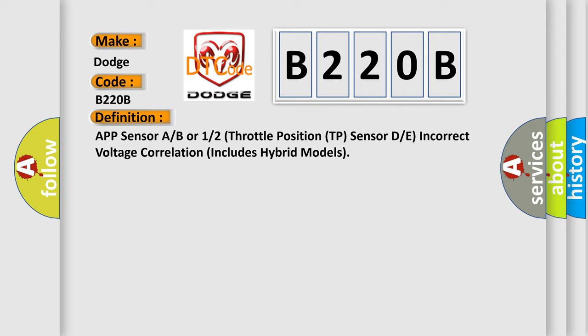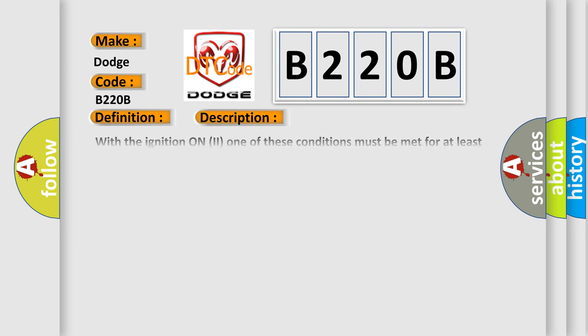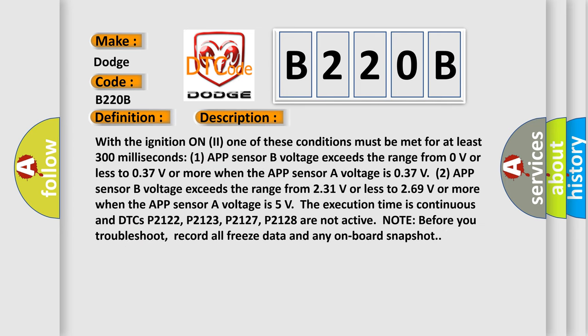Here is a short description of this DTC code. With the ignition on, one of these conditions must be met for at least 300 milliseconds. One: App sensor B voltage exceeds the range from 0 volts or less to 0.37 V or more, when the App sensor A voltage is 0.37 V. Two: App sensor B voltage exceeds the range from 2.31 volts or less to 2.69 volts or more — for example, when the App sensor A voltage is 5 volts. The execution time is continuous and DTCs P2122, P2123, P2127, P2128 are not active. Note: before you troubleshoot, record all freeze data and any onboard snapshot.